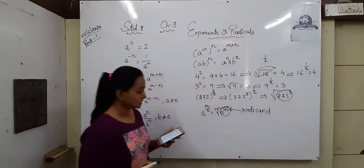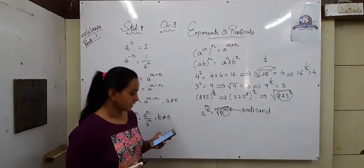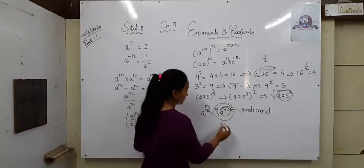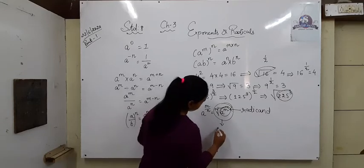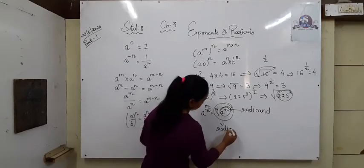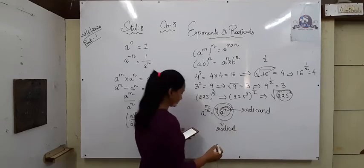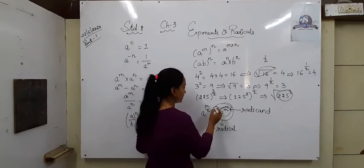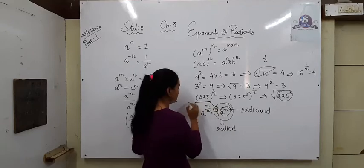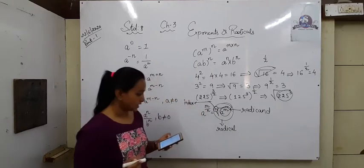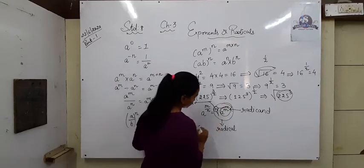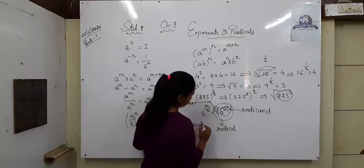The whole form with the square root sign is called a radical. Then n is called the index. The sign of the square root is called the radical sign.